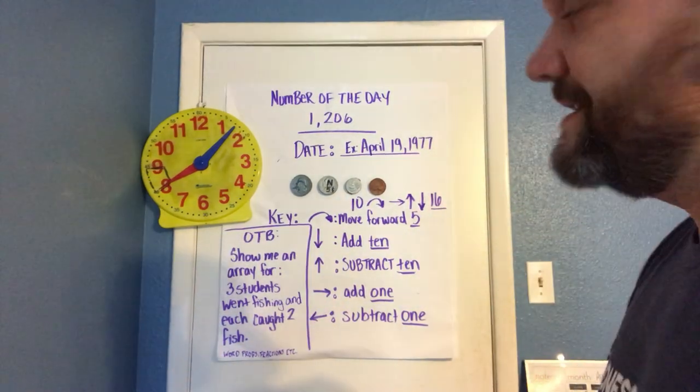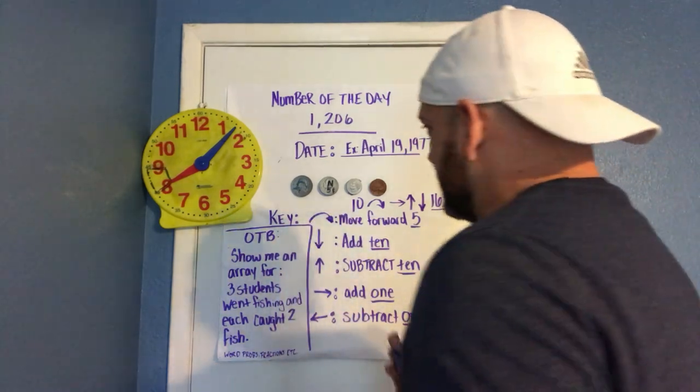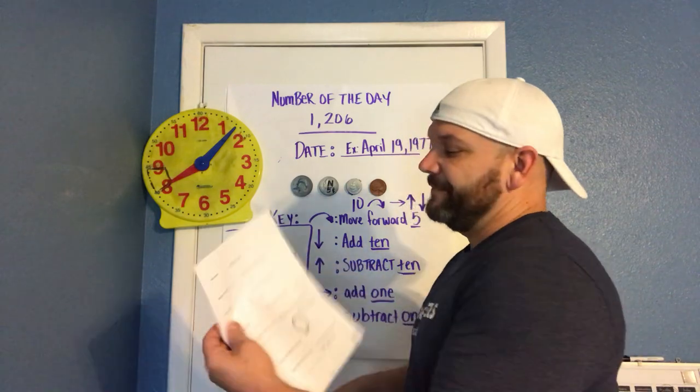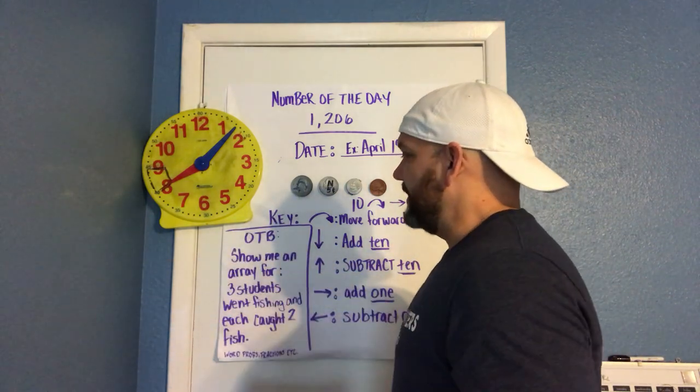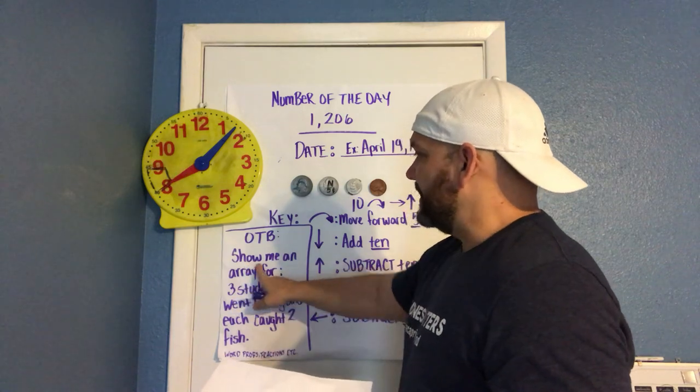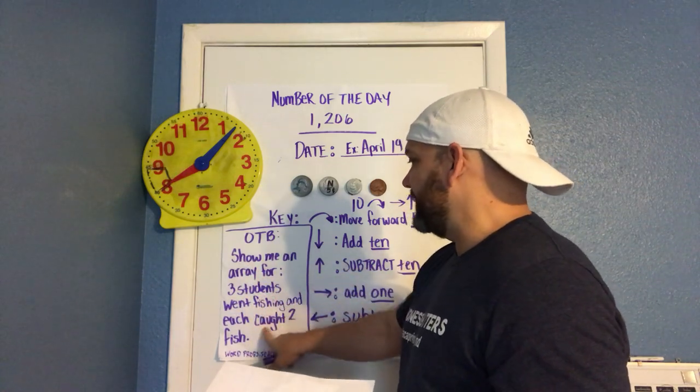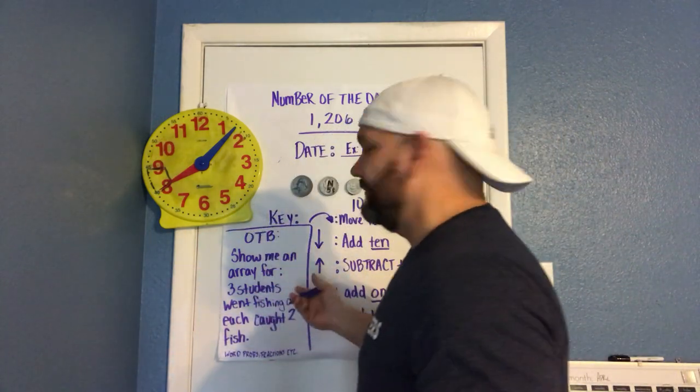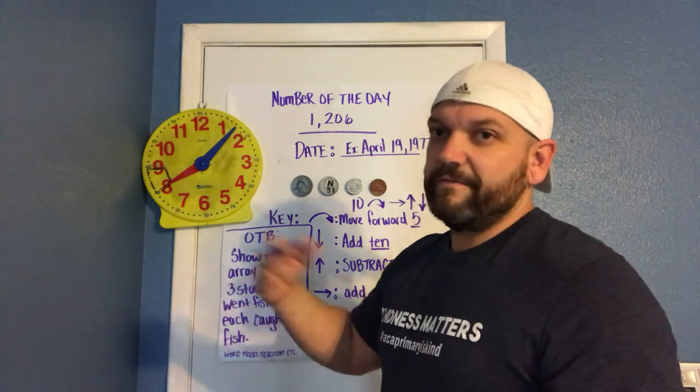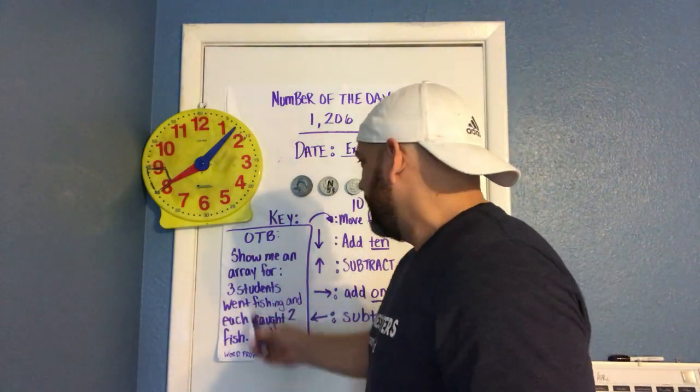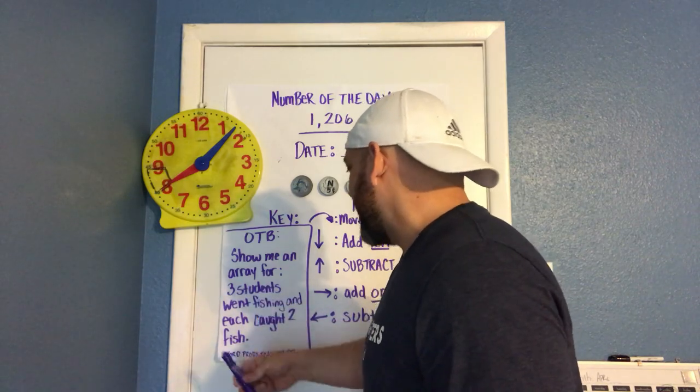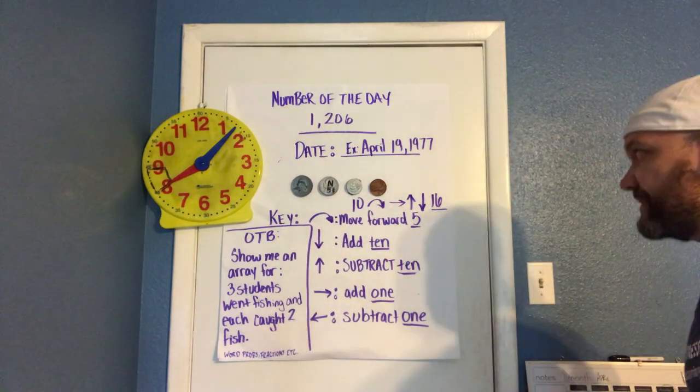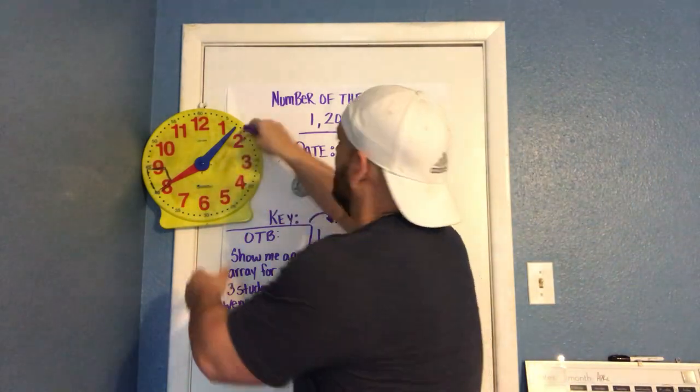The kids know how to do this already, so this shouldn't be too much of a problem for them. Then I also have what I use the initials OTB for—on the back. That would be some kind of problem that they might show me on the back. This one says show me an array for three students went fishing and each caught two fish. You would just draw an array for that, draw the fish out in an array form like I already showed you in another video. Also on the back might be a word problem, it might be a fraction problem, that type of thing.